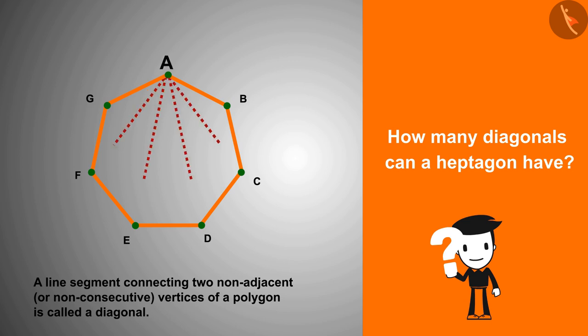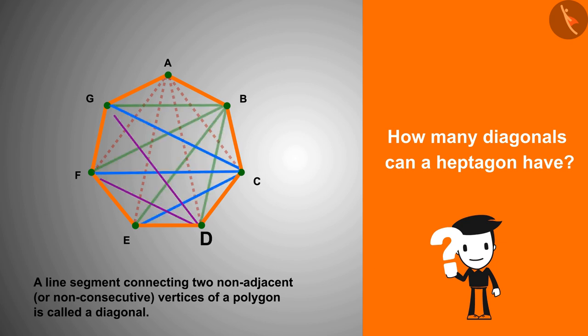So let's start with the vertex A. Now let's draw a diagonal from the vertex B. Similarly, draw diagonals from vertices C, D, and E.